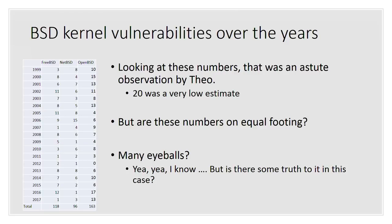The numbers for BSD and Linux over the years are not on the same level. So I asked: are they on equal footing? Obviously, there's a really large community behind the Linux kernel, whereas the BSDs have a small group of developers and users. I wondered if that was the reason, or if it really was code quality as Theo said. One thing I considered was the 'many eyeballs' thing — and there's some truth to that.